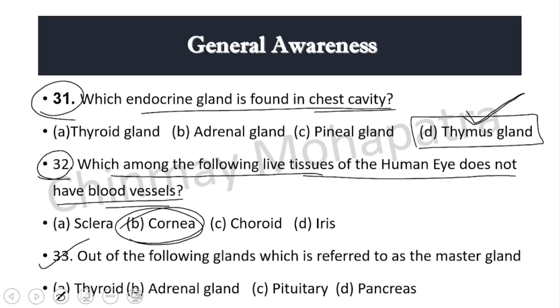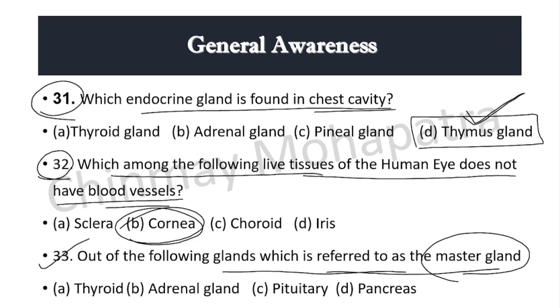Question 33: Out of the following glands, which is referred to as the master gland? Right answer: pituitary gland is known as the master gland.